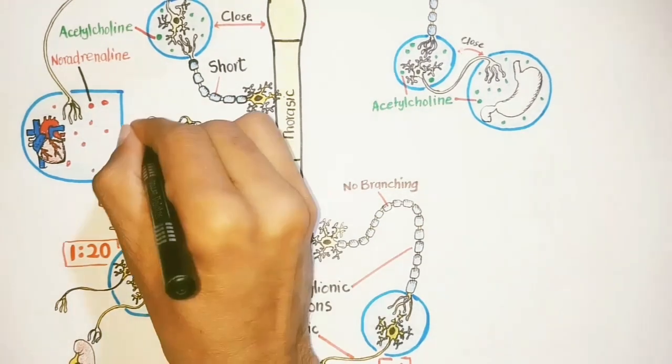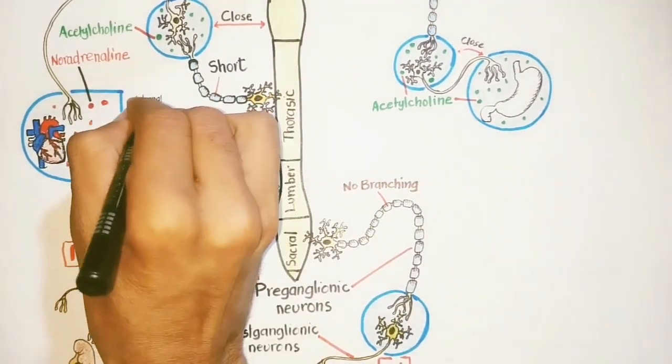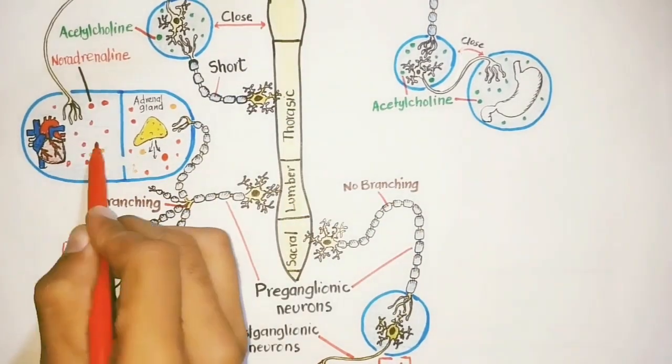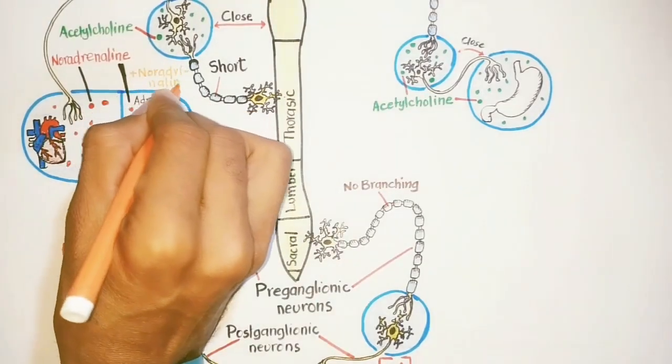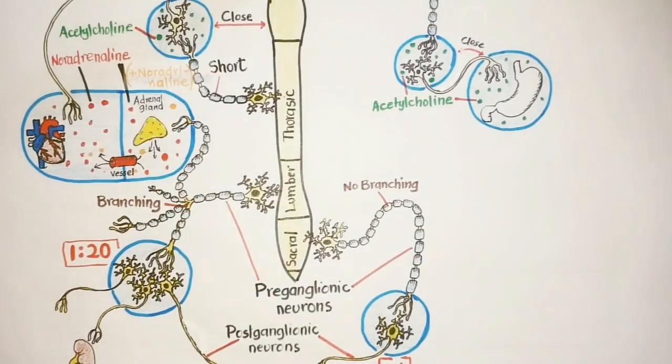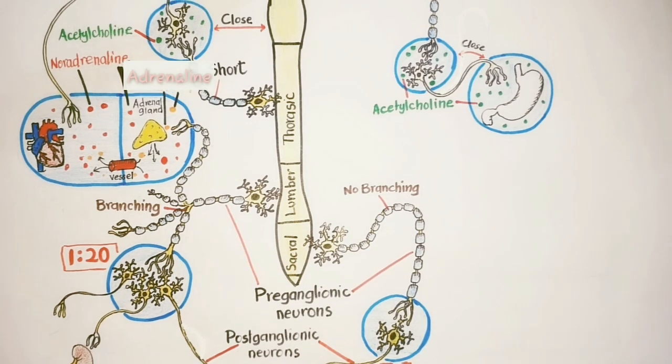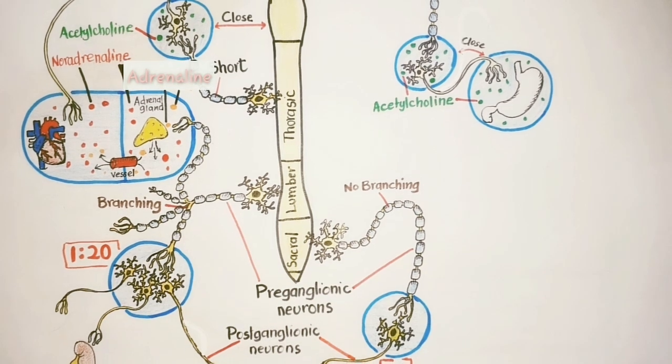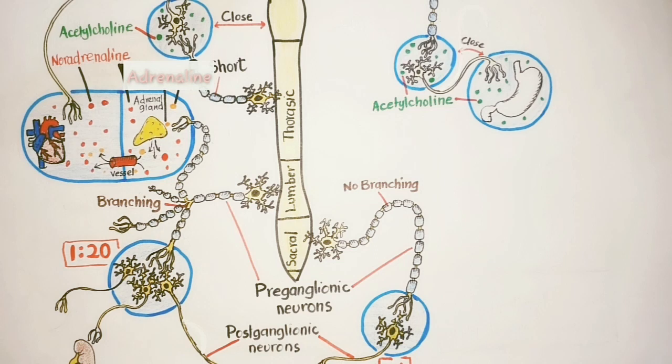Furthermore, the widespread effect of the sympathetic nervous system is also due to the secretion of adrenaline and noradrenaline from the adrenal gland. In response, these hormones target all sympathetic receptors in the peripheral nervous system. In contrast, the parasympathetic nervous system does not have any gland that may secrete parasympathomimetic agents like acetylcholine.